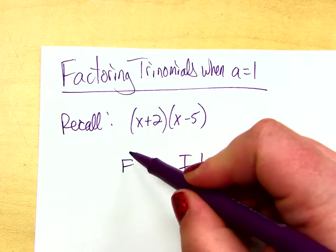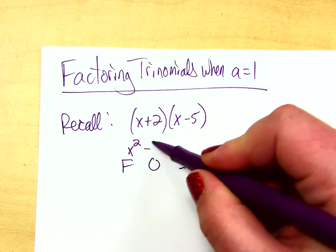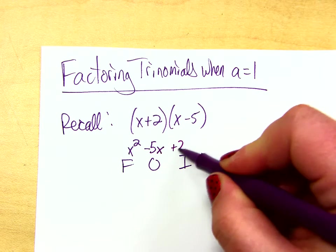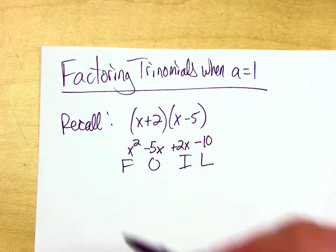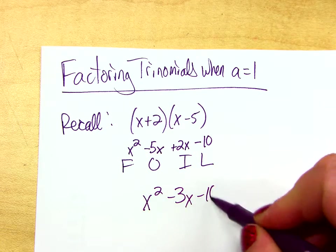First, you would get x squared. Outers minus 5x. Inners plus 2x, and last negative 10. Right, and when I put all those together, I get x squared minus 3x minus 10.